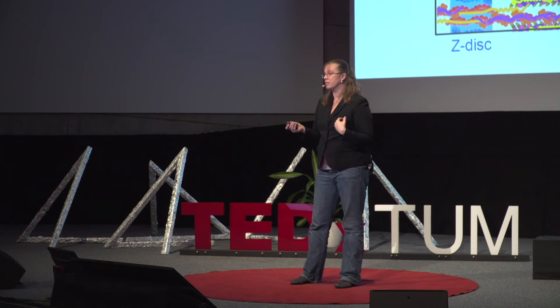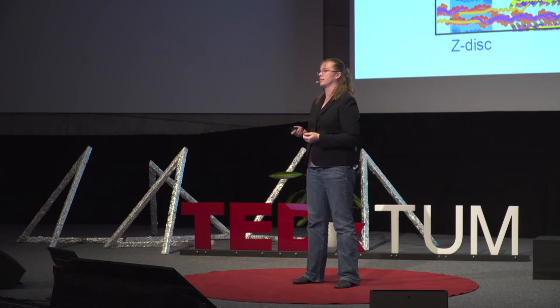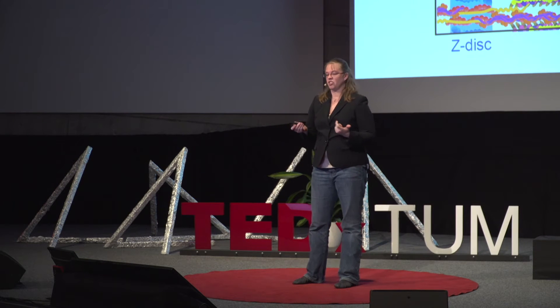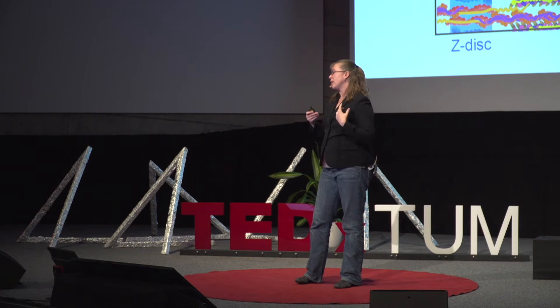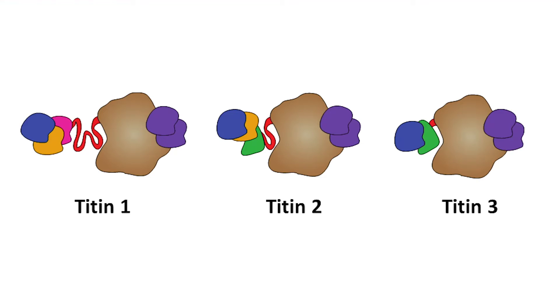Different types of muscles can put different components in their sarcomeres to get different functions. But the way that muscles solve this problem is they express different versions of the same component. For example, titin — that long component — actually has different versions. There's one that's a very long, flexible spring. There are other versions that are very short and stiff. You can imagine that something that's a very long, flexible spring is going to have a very different contraction property than something that's very short and stiff.